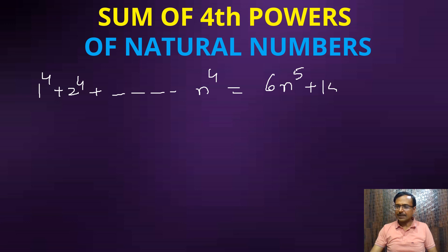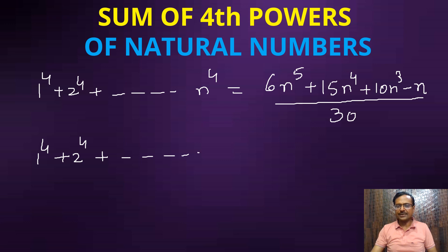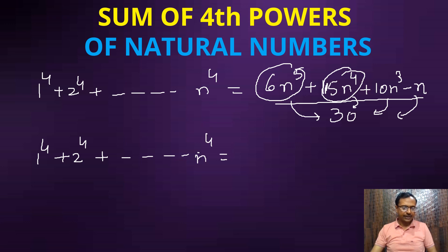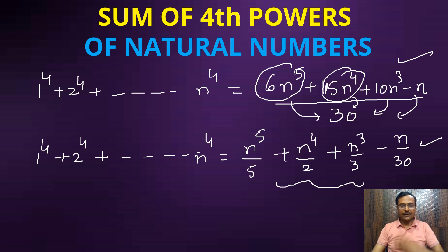In the second form, I've multiplied all the factors in the numerator to get an algebraic expression: 6n⁵ + 15n⁴ + … with the denominator remaining 30. In the third form, you separate each power: 6n⁵/30 + 15n⁴/30 and so on, which simplifies to n⁵/5 + n⁴/2 + n³/3 + n/30. So there are three different forms in which the sum of fourth powers of first n natural numbers can be expressed.